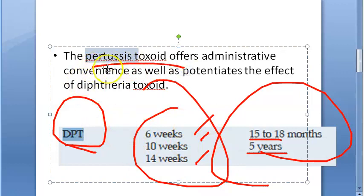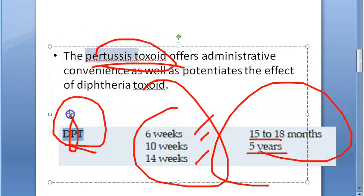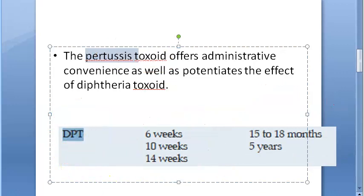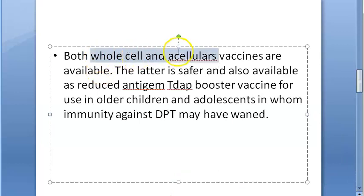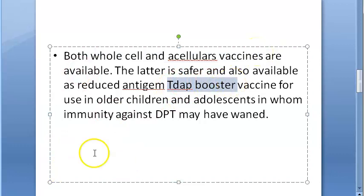We are discussing DPT, which is now actually pentavalent. The pertussis toxoid — the P part — will potentiate the effect of the diphtheria toxoid, so it is actually improving the effect of the diphtheria vaccine. That is why pertussis is combined with diphtheria, tetanus, and others. Both whole cell and acellular vaccines are available.